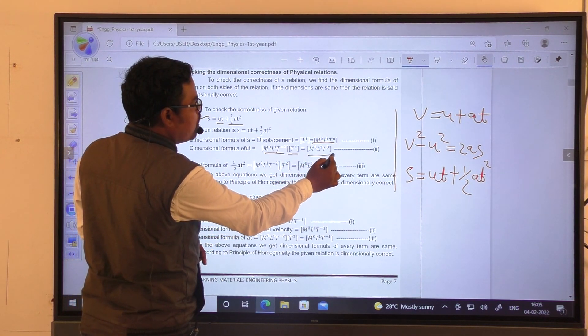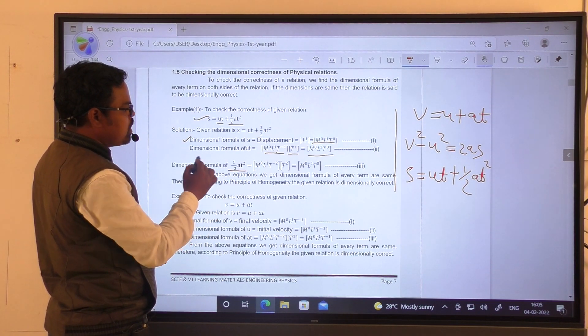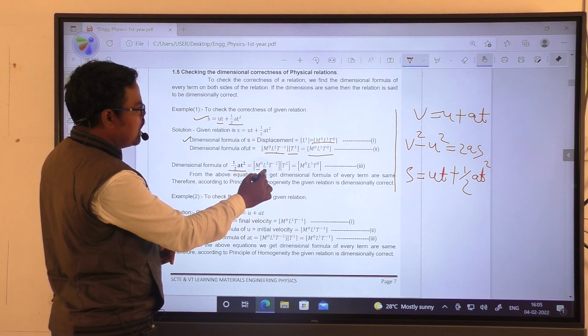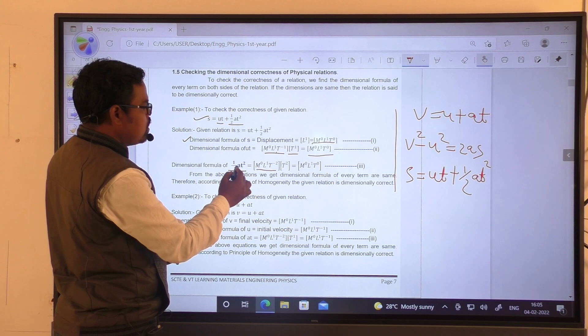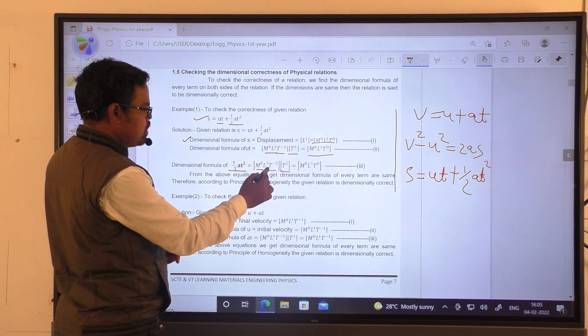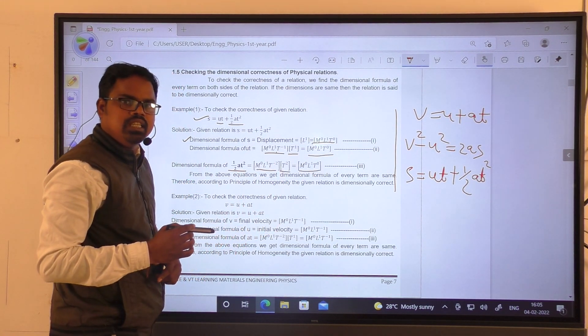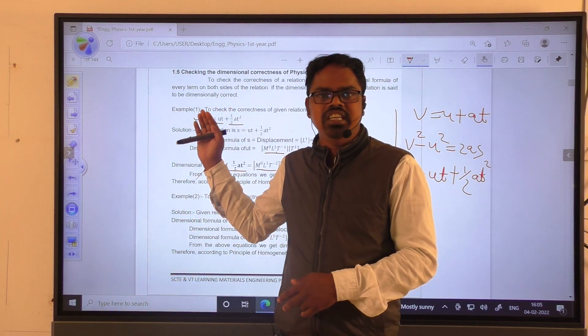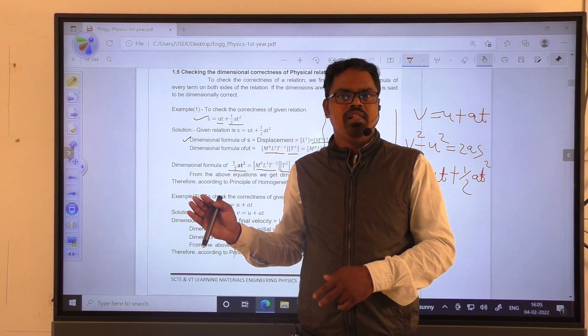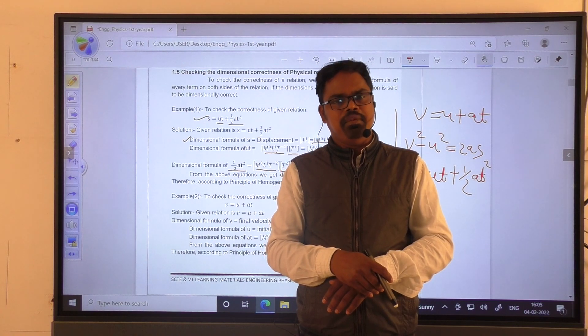Similarly, dimensional formula of half at square: we get dimensional formula of acceleration M⁰L¹T⁻², times t square. After multiplication we get M⁰L¹T⁰. You see here the dimensional formula of these three terms becomes same, so the given relation is correct dimensionally.